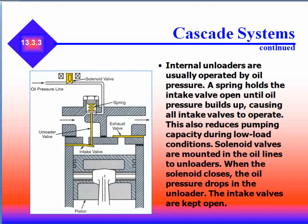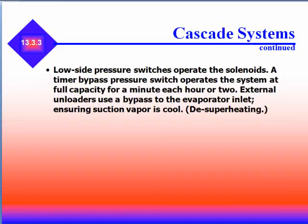When the solenoid closes, the oil pressure drops in the unloader and the intake valves are kept open. Low side pressure switches operate the solenoids. A timer bypass switch operates the system at full capacity for a minute each hour or two. External unloaders use a bypass to the evaporator inlet, ensuring suction vapor is cool — in other words, de-superheating it.